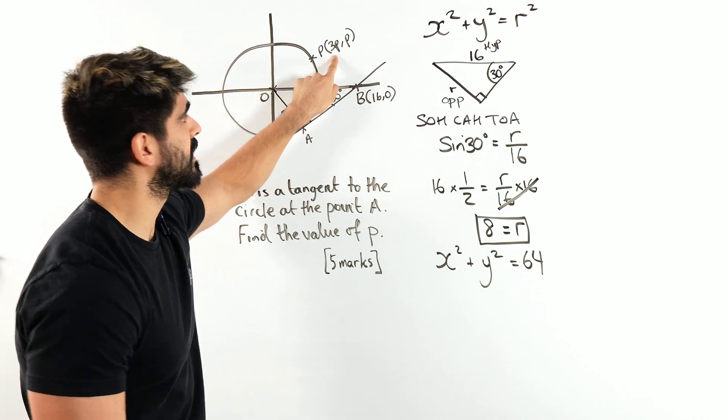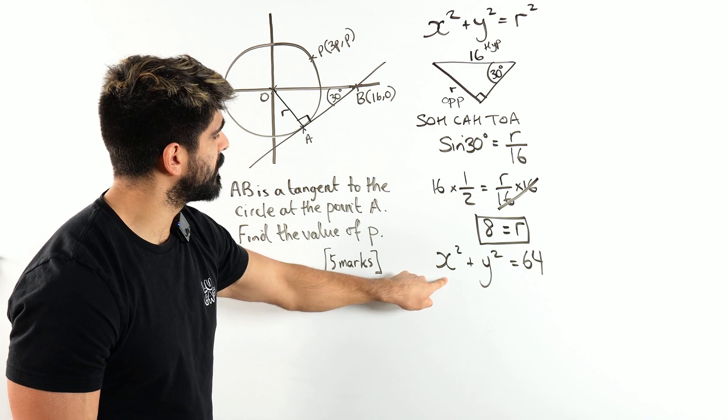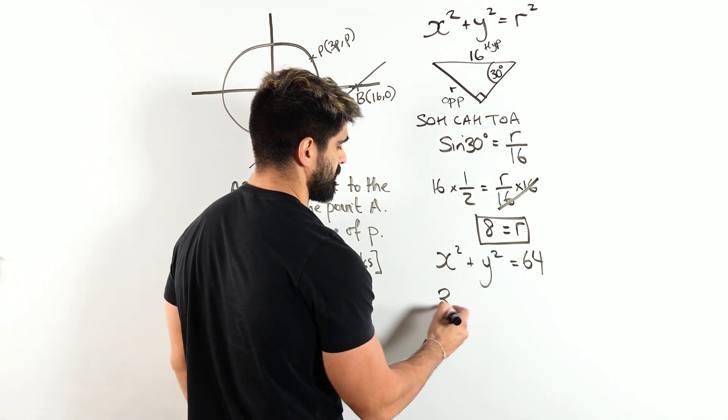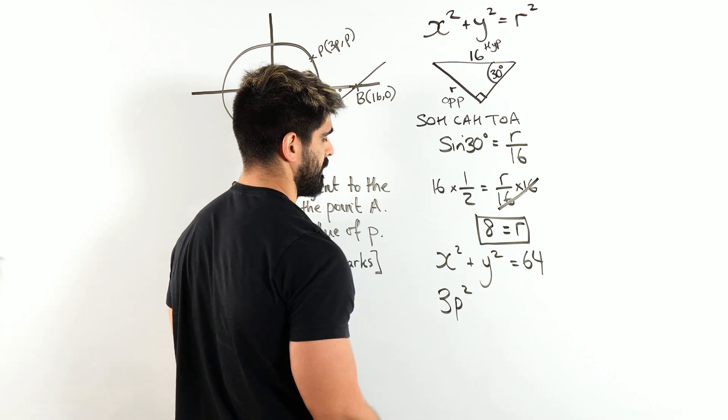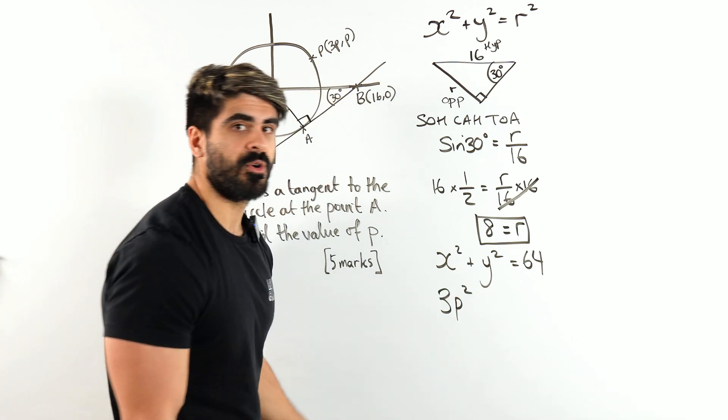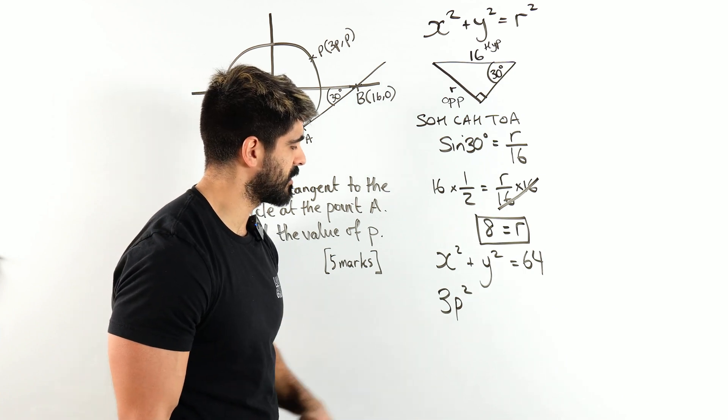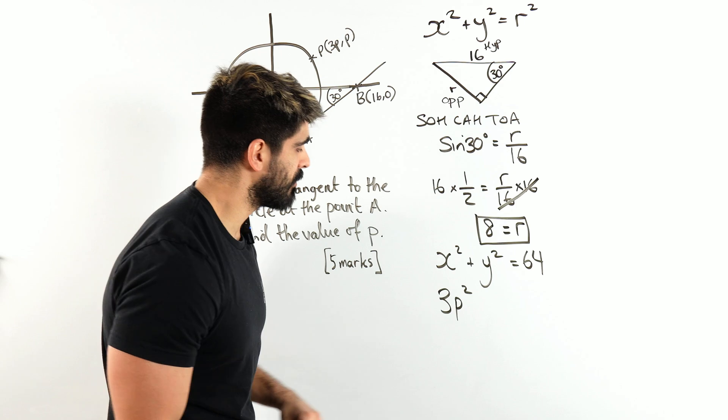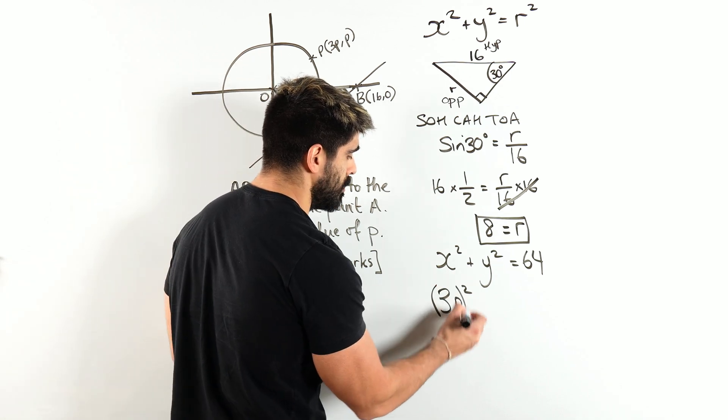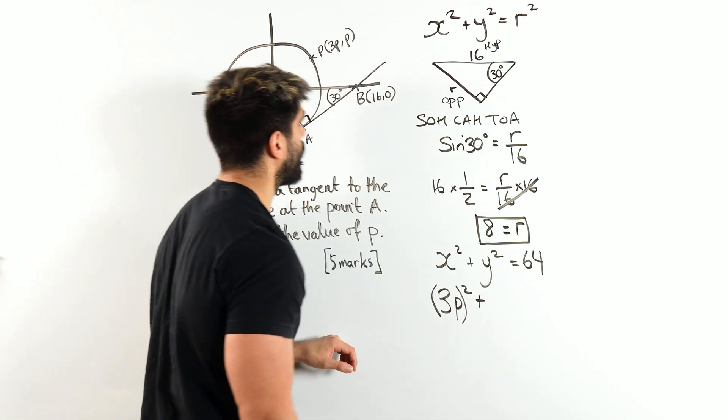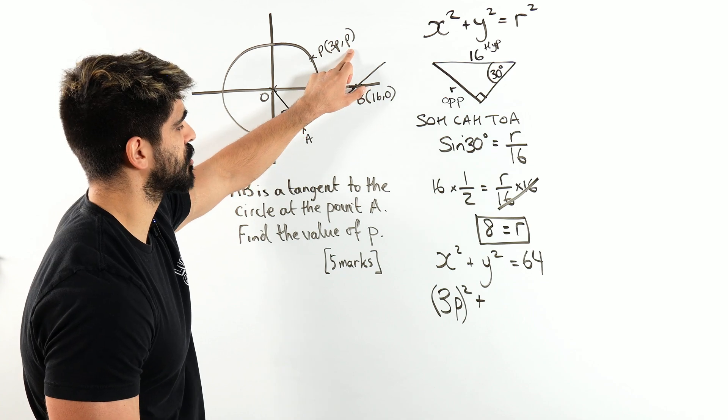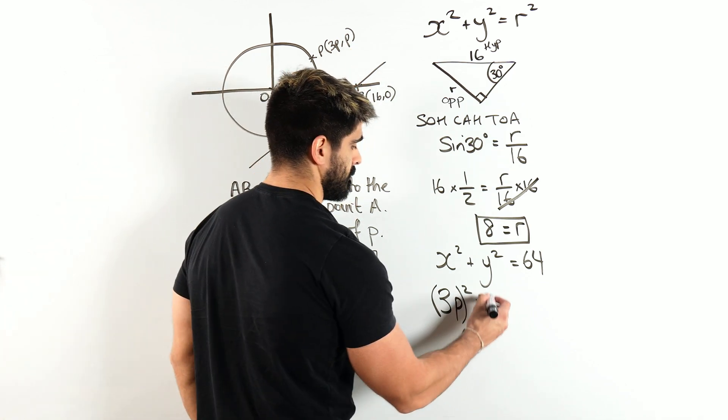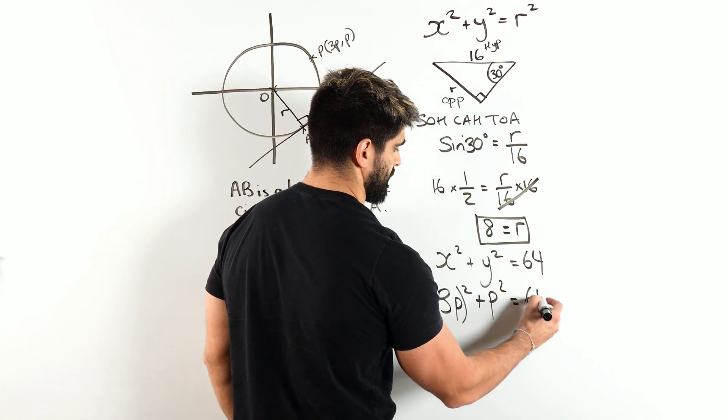What's the most common mistake here? When they sub in 3p for x, they write this. x is 3p, then they put squared. What's wrong here? They didn't square the 3. So we're going to write like this. We need to use brackets, 3p squared plus y squared. This one's alright because you're just changing y to p, equals 64.